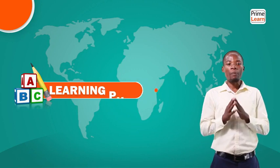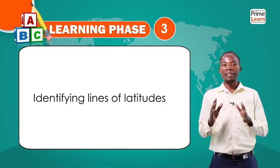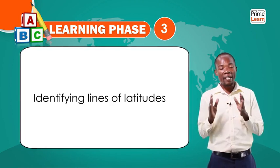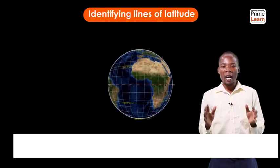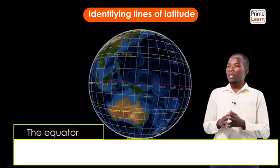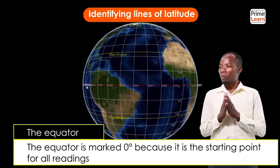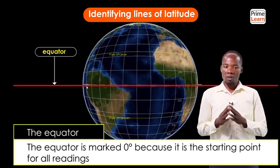Welcome back from that simple activity. Let me hope you got a hundred percent. We are going to the next competence: identifying important lines of latitude. Lines of latitude are imaginary lines running from east to west, drawn on maps or globes. We have five major important lines of latitude. The first one is the equator, which is marked zero degrees.